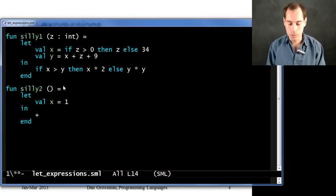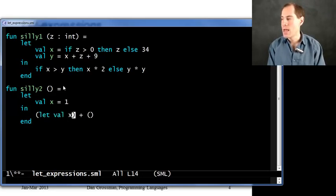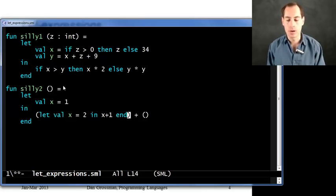What if this body were an addition expression, so we know addition is going to take two arguments. And these could be let expressions if we want. You can put a let expression anywhere you can put an expression. So, what if I did something like val x equal two in x plus one end?